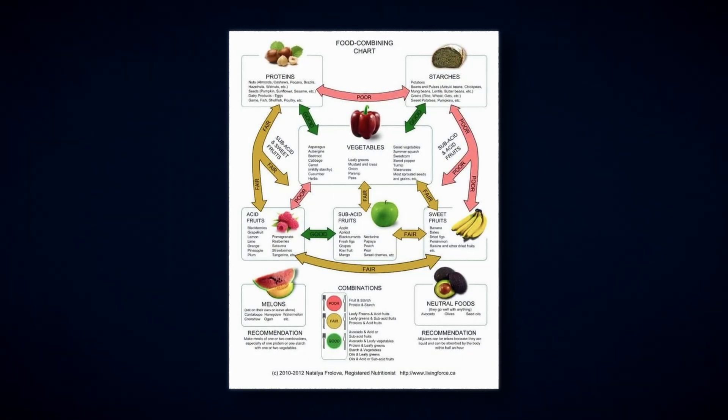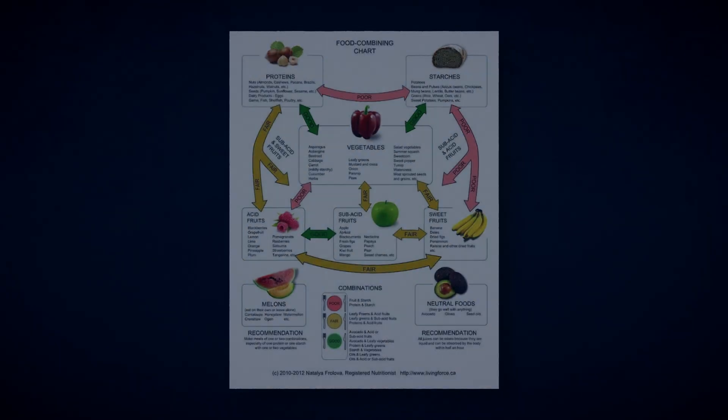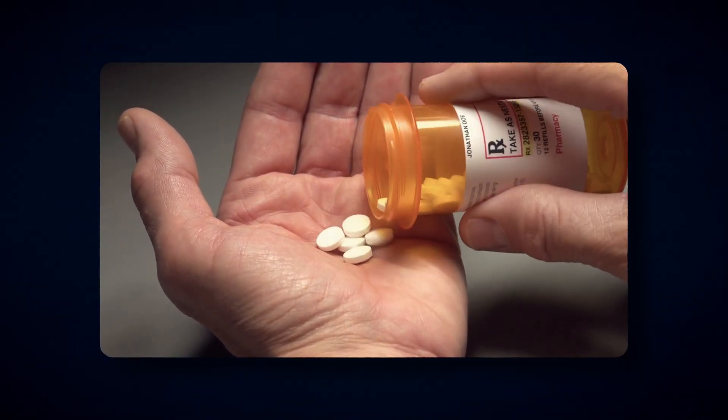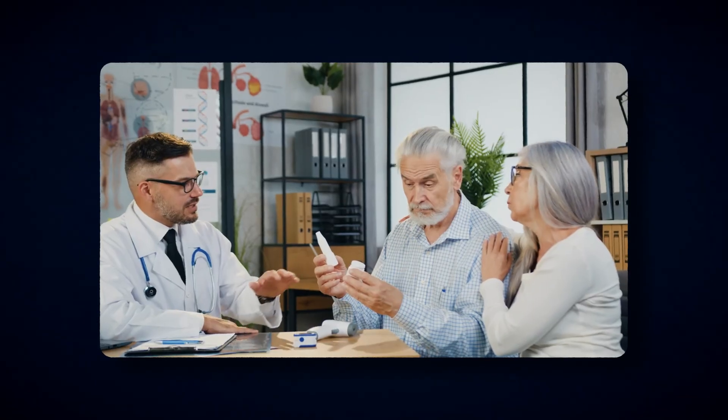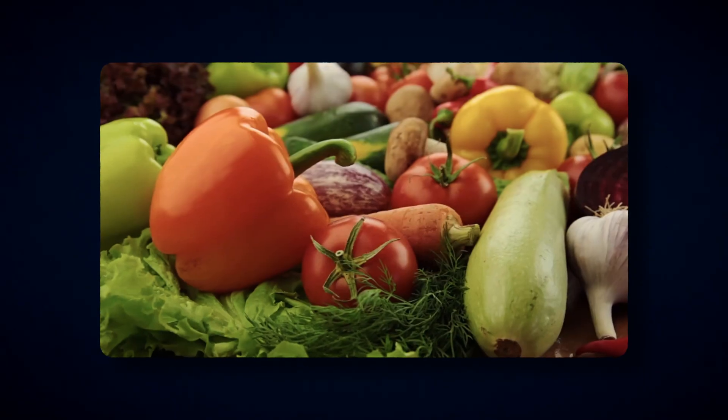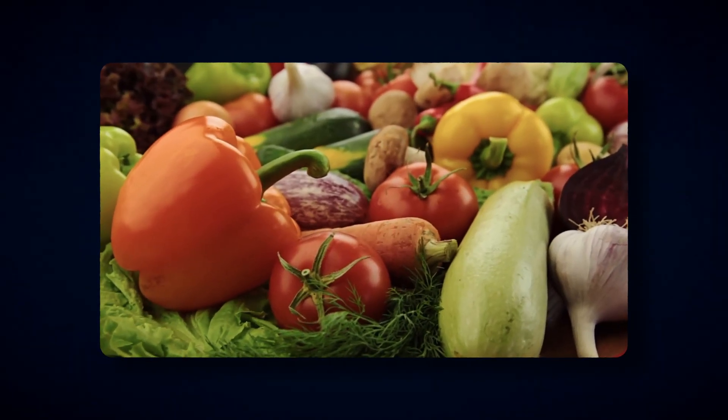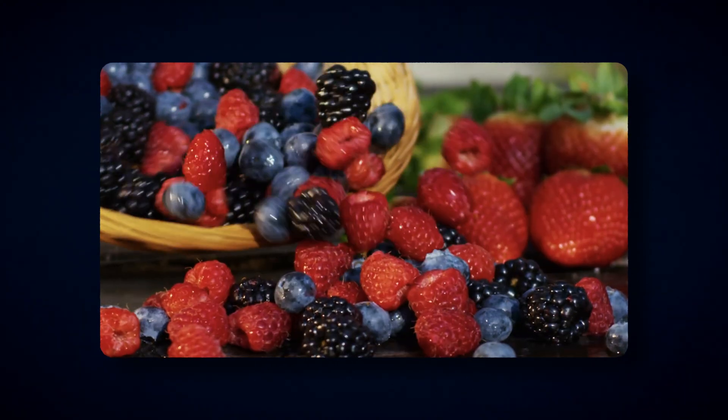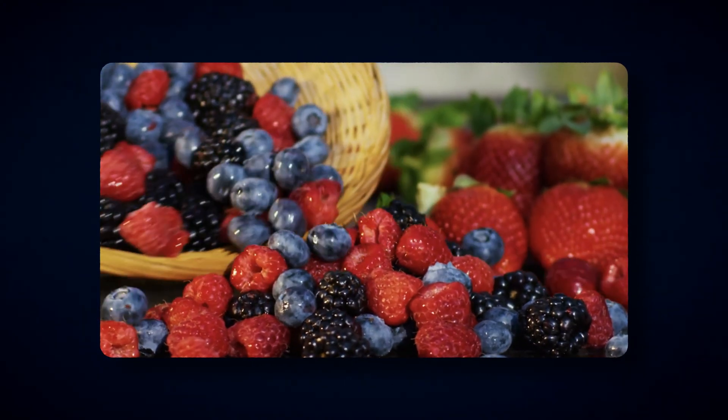Researchers also tested common medications like statins and anti-inflammatory drugs that have been associated with reduced cancer risk. These drugs also inhibited angiogenesis. And when compared head to head with dietary factors, many foods performed just as well. Parsley, soy, garlic, grapes, and berries all demonstrated significant anti-angiogenic effects in the lab.